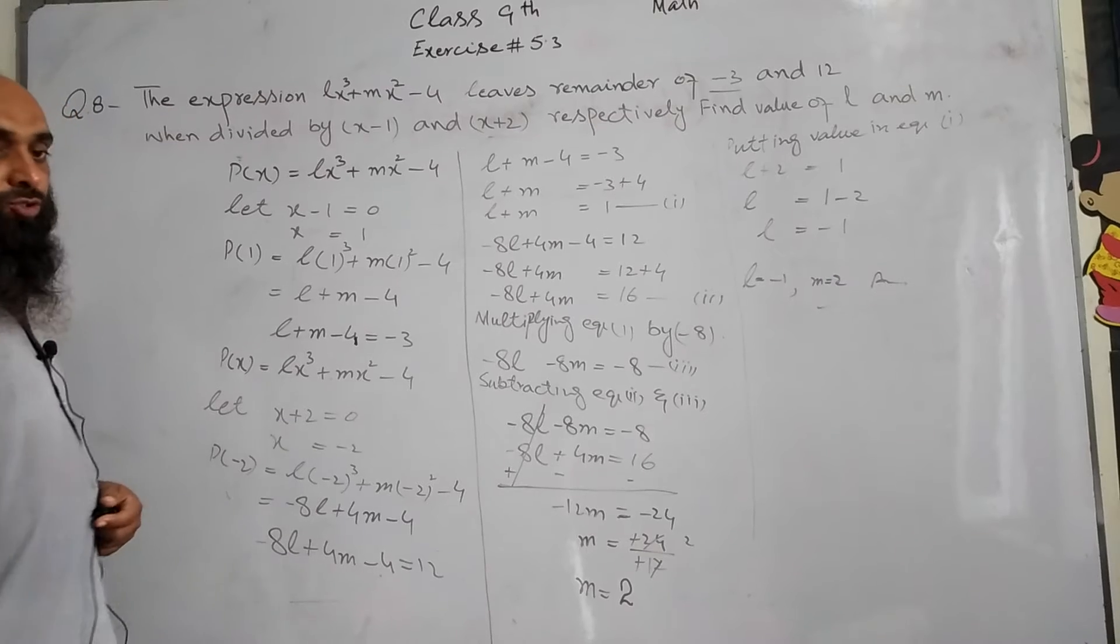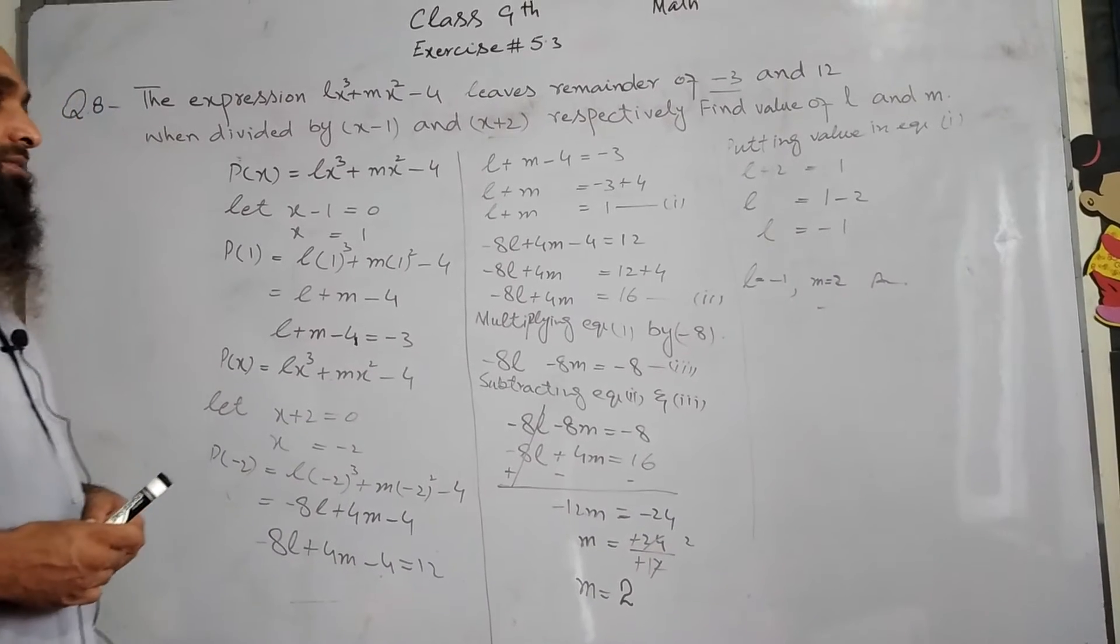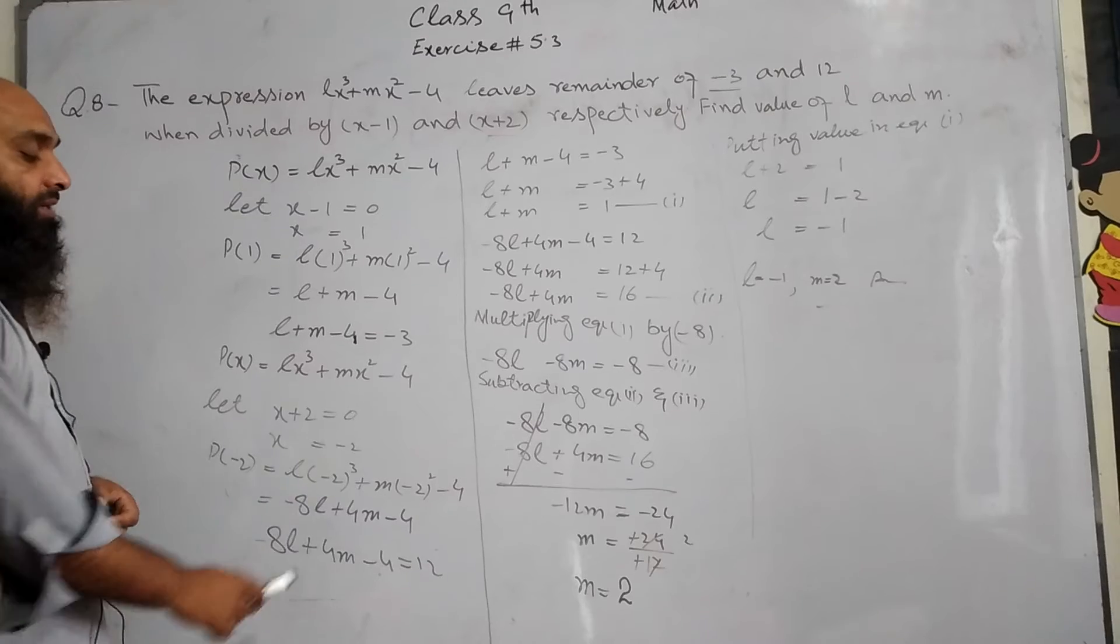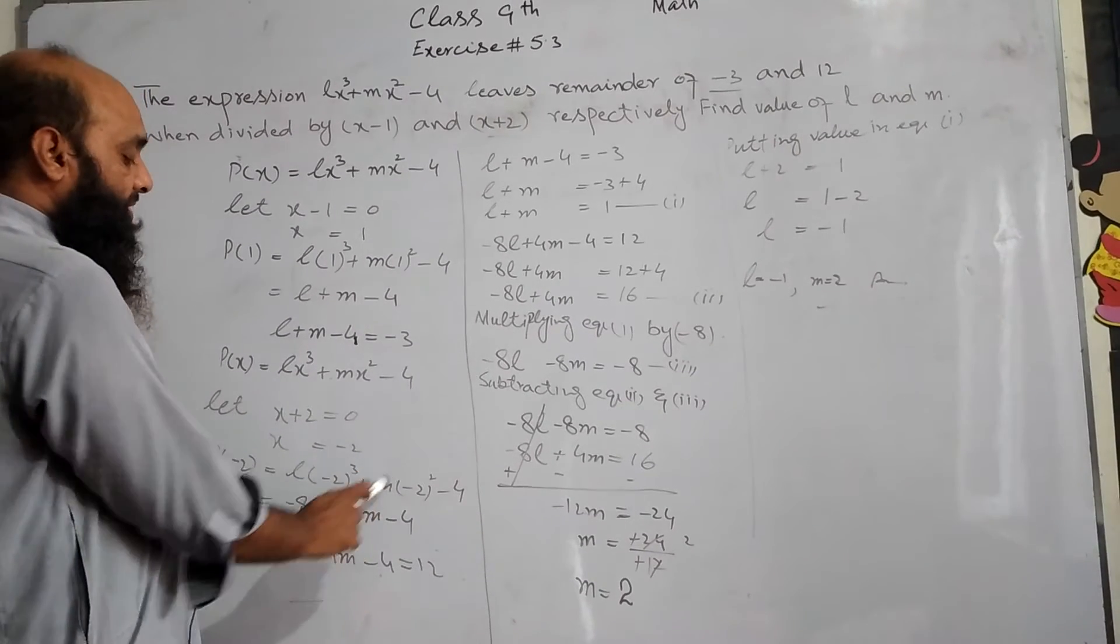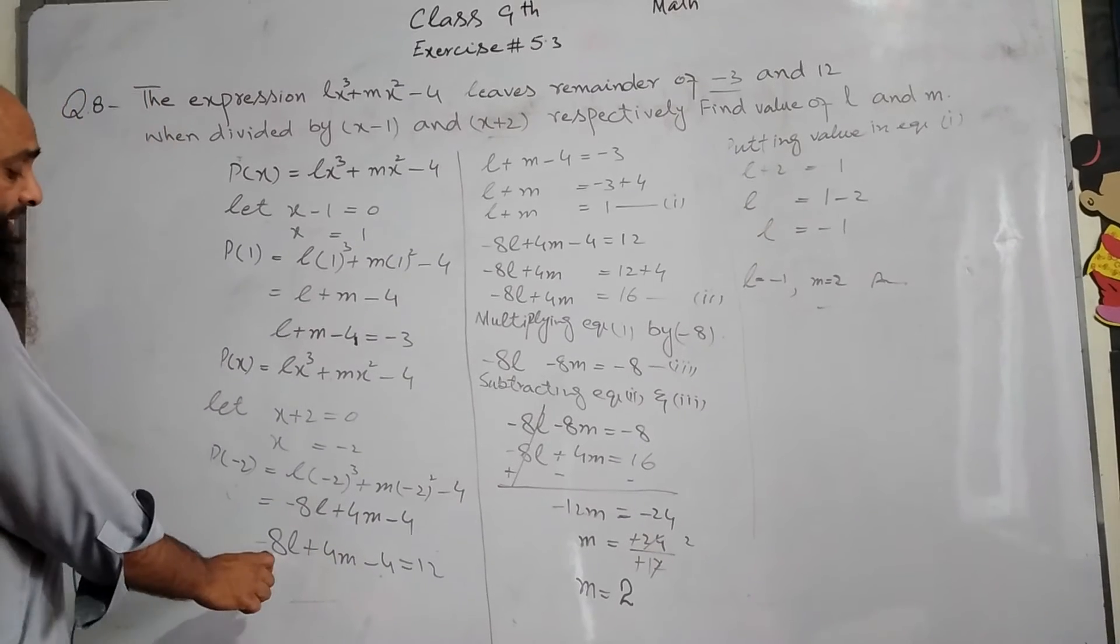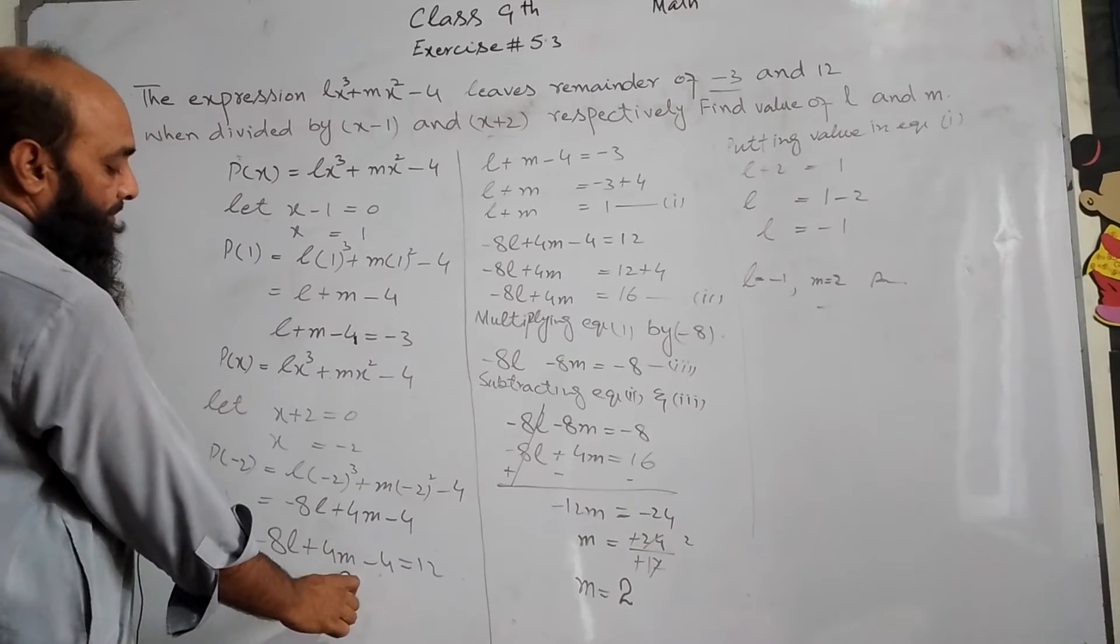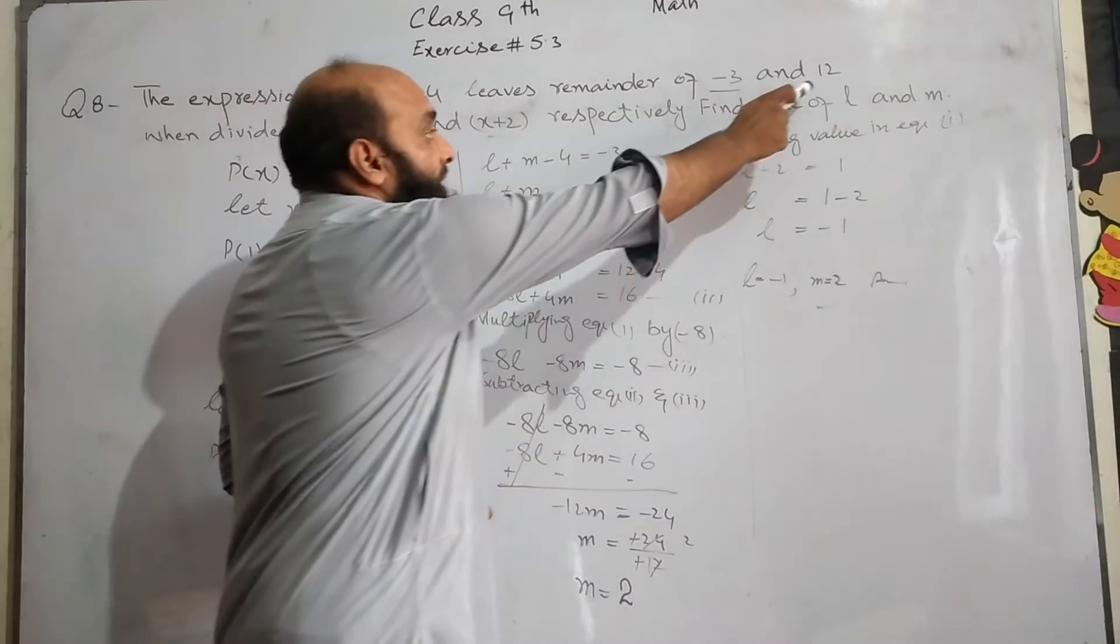So we get 4l minus 2m minus 4, and this equals 12. So 4l minus 2m equals 16. We can simplify: minus 8l plus 4m. And here -4 goes to the other side as plus 4.